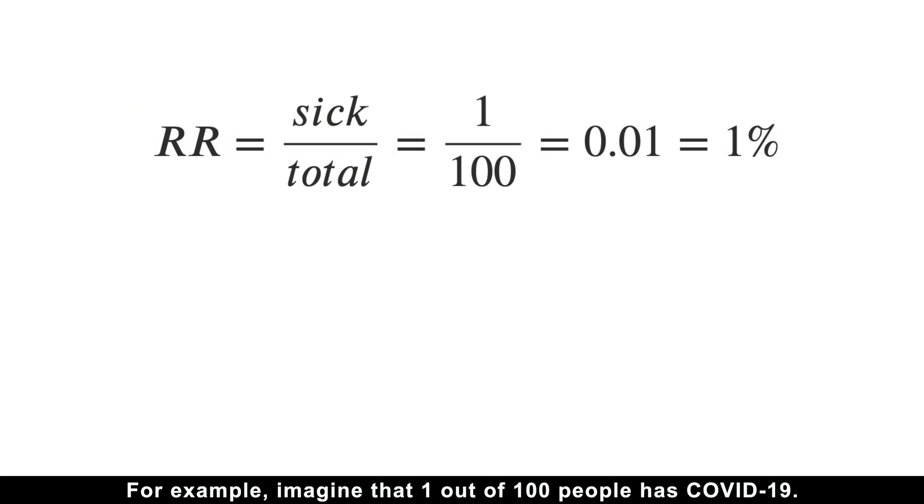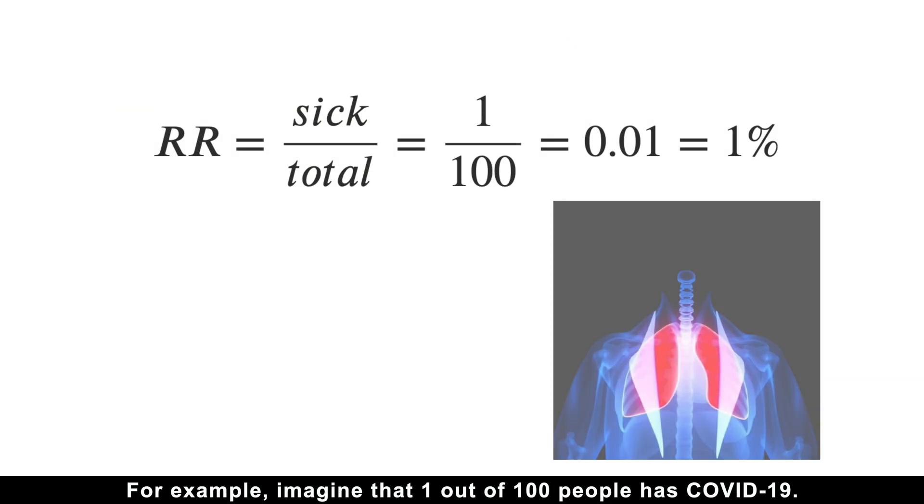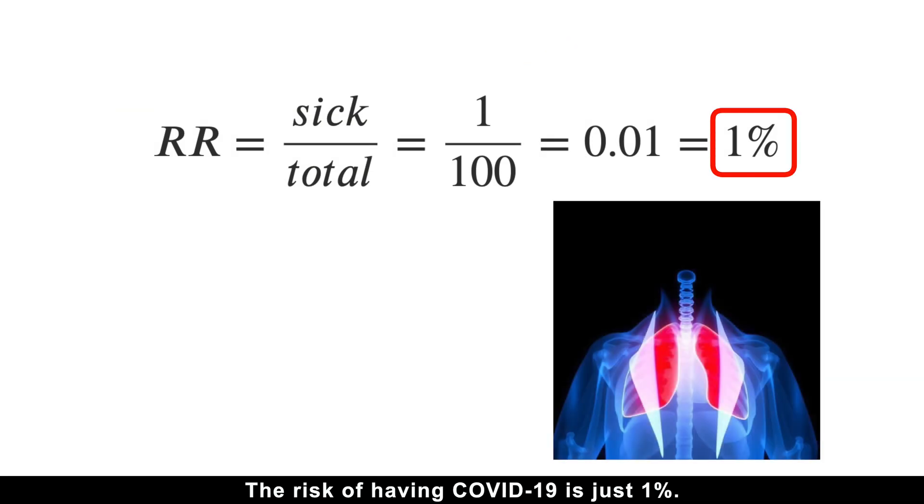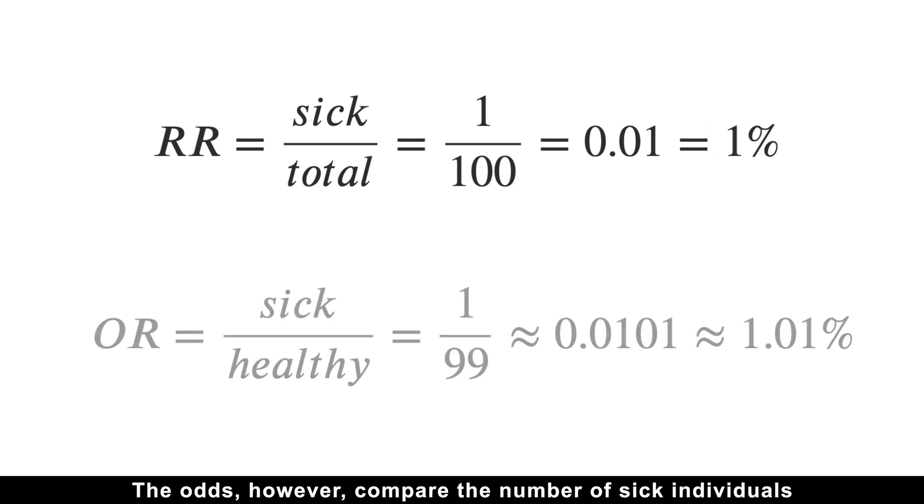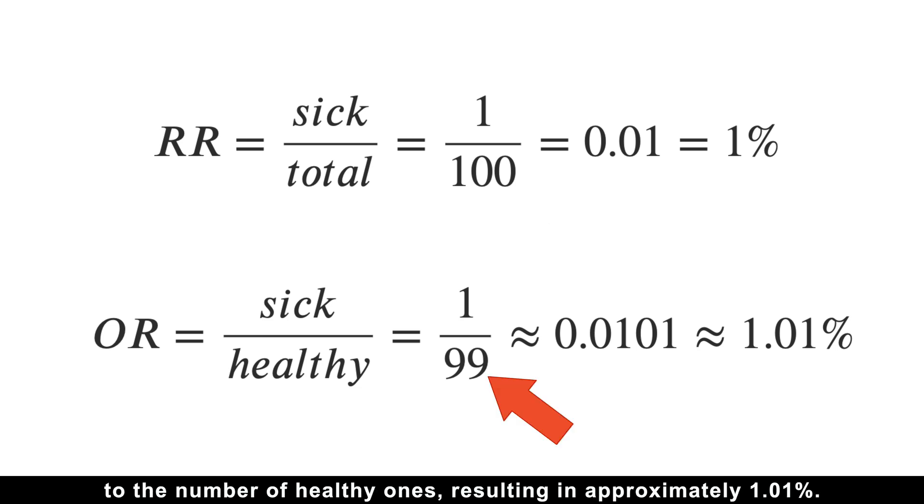For example, imagine that one out of 100 people has COVID-19. Their risk of having COVID-19 is just 1%. The odds, however, compare the number of sick individuals to the number of healthy ones, resulting in approximately 1.01%.